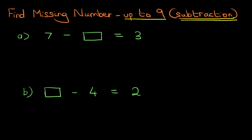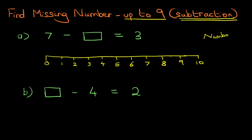Now, for both of these examples, we can use the number line, but we use it differently. So, let's have a look at the first one: 7 minus something equals 3. The first step is we're going to draw the number line. We've got 0, 1, 2, 3, 4, 5, 6, 7, 8, 9, and 10. So, our number line is 0 to 10.